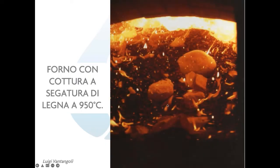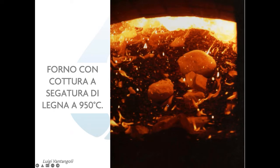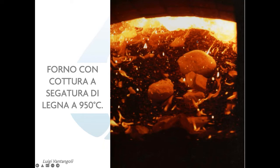Si chiama calce viva perché se appoggio uno di questi sassi sulla scrivania e torno dopo qualche giorno, si è frantumato da solo in tanti pezzettini. Se torno dopo qualche mese troverò un mucchietto di polvere bianca, perché è sufficiente l'umidità dell'aria per scatenare la reazione stechiometrica di spegnimento. Quello che si ottiene alla fine è calce idrata, cioè calce spenta in modo stechiometrico, con la quantità esatta d'acqua necessaria.